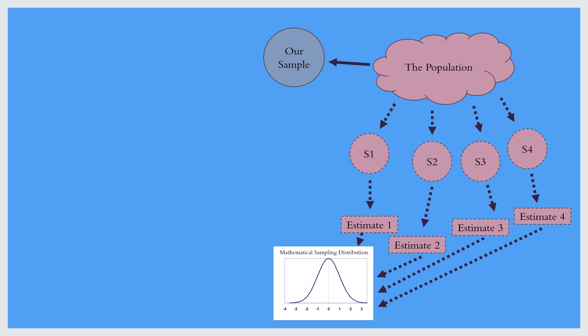We imagine estimating a statistic from each of these samples, and from all those estimates we can create a sampling distribution. This is all done mathematically, so this is a mathematical sampling distribution and it's all based upon a null hypothesis. We then take an estimate from our actual sample — representing this with a solid arrow — and compare it to the mathematical sampling distribution to see if it appears reasonable that this came from that distribution. If so, we retain the null hypothesis; if not, we reject it.